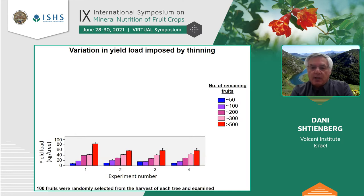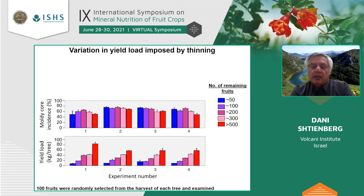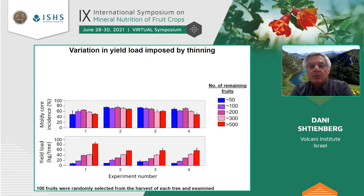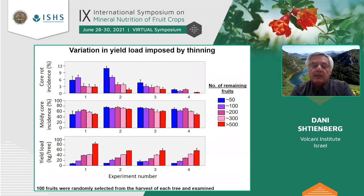After fruit maturity, we harvested 100 fruits from each tree and recorded moldy core incidence. There were no great differences in moldy core between treatments — this was expected, because Alternaria infection occurred during blooming, well before our thinning. Nevertheless, there was a significant difference in core rot incidence between treatments. As with natural variation, whenever yield was low, core rot incidence was high, and vice versa. This occurred in three out of the four experiments.